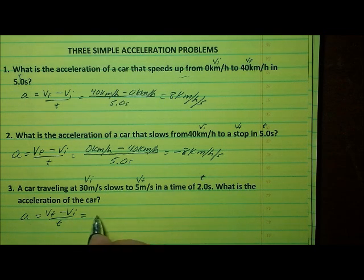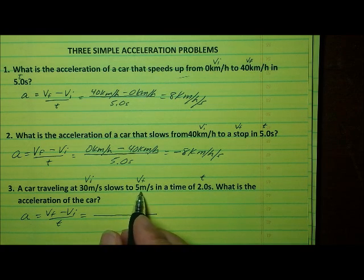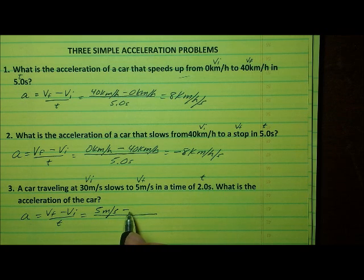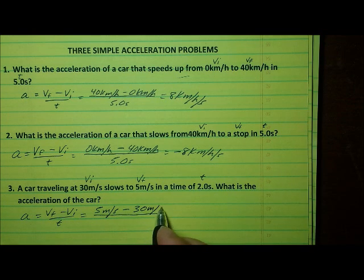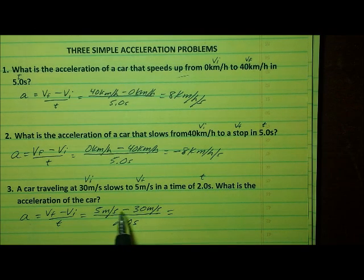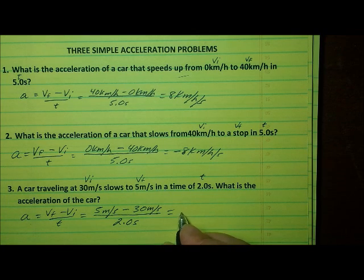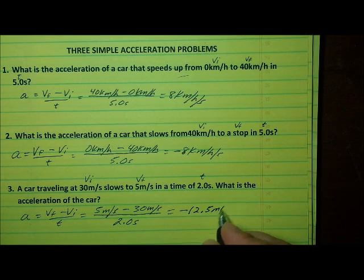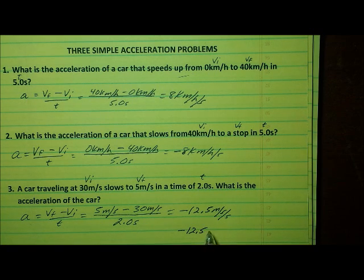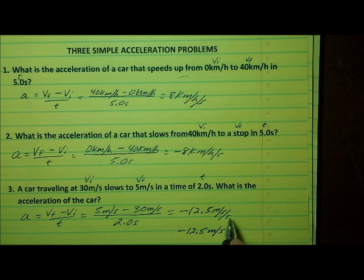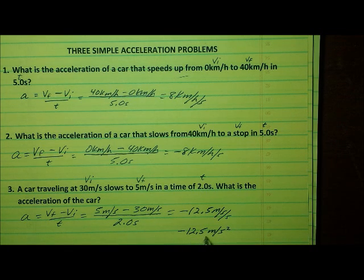Acceleration equals v sub f minus v sub i divided by t. That gives us the final velocity, 5 meters per second, minus the initial velocity, 30 meters per second, in a time of 2 seconds. 5 minus 30 gives us negative 25. Negative 25 divided by 2 gives us negative 12.5 meters per second per second. We can also write it as negative 12.5 meters per second squared, since dividing by seconds twice is the same as dividing by seconds squared.